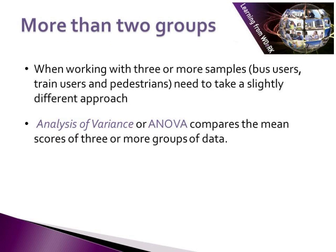So far we have looked at determining how likely it is that one sample belongs to a population, and then where two samples belong to a common population. However, there are often situations where we need to look at more than two samples, which means taking a slightly different approach. The approach we use for dealing with more than two samples is what we call an ANOVA, or Analysis of Variance. An ANOVA is another statistical technique for comparing the mean scores of study respondents, but it differs from the t-test in that it is used to compare the mean scores of three or more groups of data.